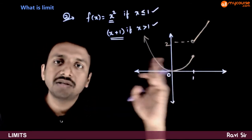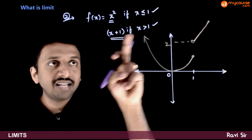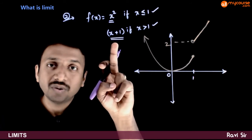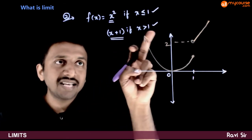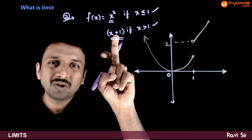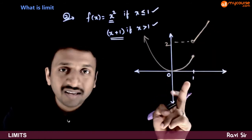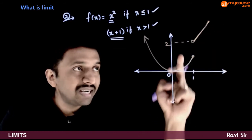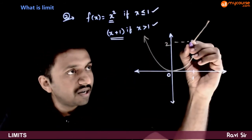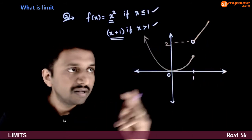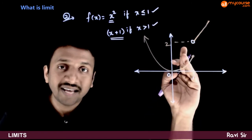Just as x crosses 1, the function x square does not work. As x is greater than 1, the graph corresponds to y is equal to x plus 1, which is a straight line. As x tends to 1, x plus 1 tends to 2. But since this graph is not valid at x equal to 1 — it is only valid for x greater than 1 — we represent that point with a hollow dot.